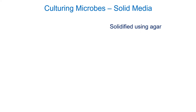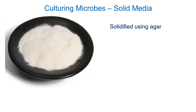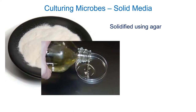Agar is an extract from seaweed sold as a white powder — you can buy it in grocery stores as 'agar agar' to solidify food. You add it to your liquid medium, put it in the autoclave which sterilizes the media and melts the agar. While still hot and liquid, you can pour it into the base of a petri plate — that's how petri plates are made.